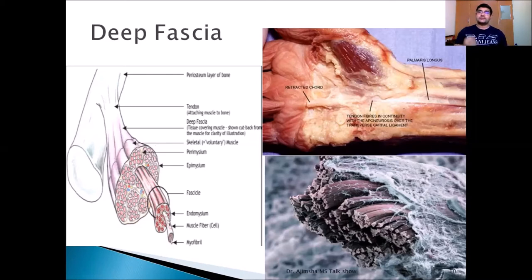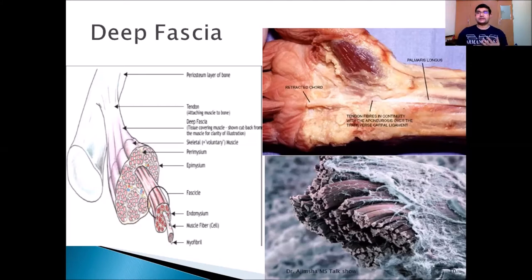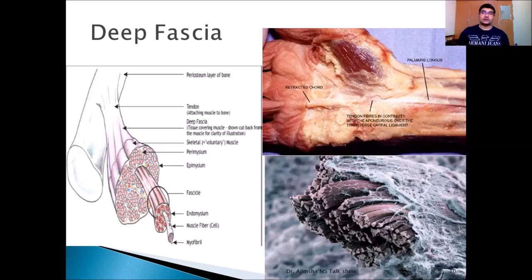Now into the deep fascia. Deep fascia is a relatively thick, dense, and discrete fibrous tissue layer that surrounds bones, muscles, nerves, and blood vessels. It acts as a base for the superficial fascia and as an enclosure of muscle groups. The main function of the deep fascia is to support and protect muscles and other soft tissue structures. Regarding internal organs, the fascia tends to be highly vascularized, contains well-developed lymphatic channels, and has a lot of free and encapsulated nerve endings.